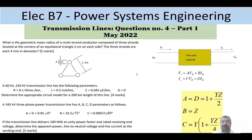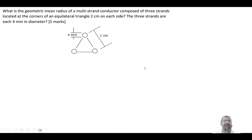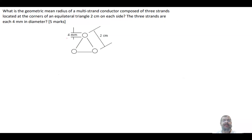The first part asks: what is the geometric mean radius of a multi-strand conductor composed of three strands located at the corners of an equilateral triangle, two centimeters on each side, where each strand is four millimeters in diameter? In this question, we want to find what we call the geometric mean radius (GMR).